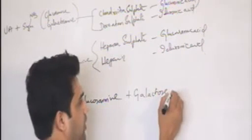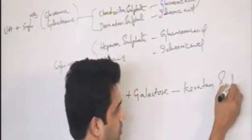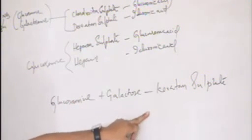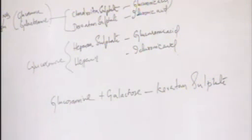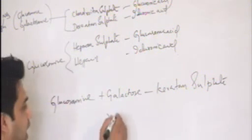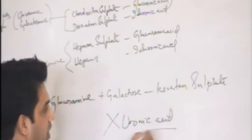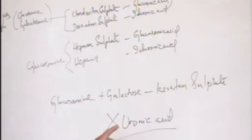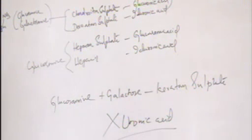Keratan sulfate: glucosamine plus galactose is keratan sulfate. What is different here? No uronic acid. So here comes your question: which of the following glycosaminoglycans will not have a uronic acid? It is keratan sulfate. Keratan sulfate has no uronic acid — it is plain galactose with glucosamine. That is keratan sulfate.